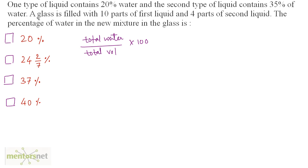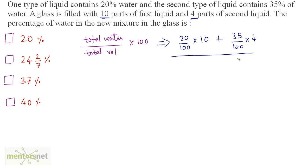We need to add water contained in the first liquid and water contained in the second liquid. The water in the first liquid is 20% of its volume: 20/100 × 10. Plus the water in the second liquid, which is 35% of its volume: 35/100 × 4. This is divided by the total volume, which is 10 + 4, times 100 to calculate the percentage.